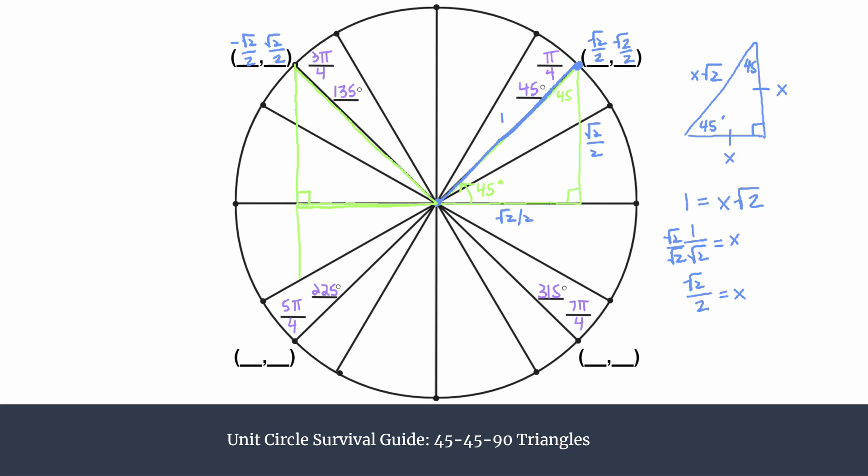So then similarly, we can orient that triangle in the third quadrant, another 45-45-90 with a hypotenuse of 1. And I'll go ahead, same thing in the fourth quadrant. So the triangle is the same, it's just reoriented. And all we have to do is adjust our signs. So in the third quadrant, of course, both coordinates are negative. And in the fourth quadrant, we know we went in the positive x-direction and the negative y-direction.